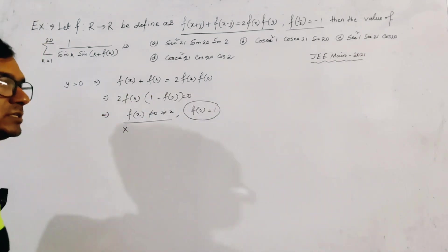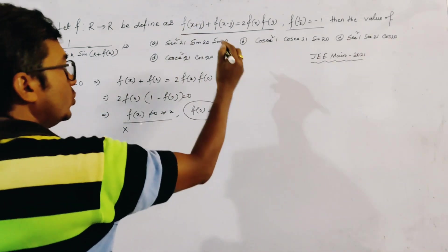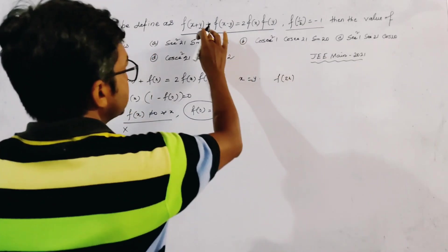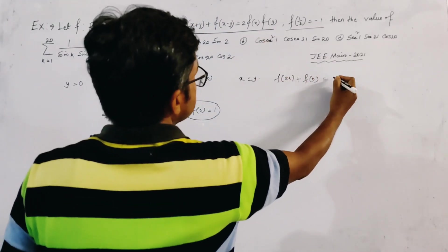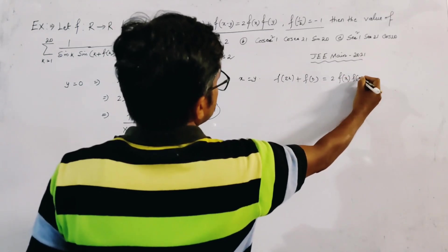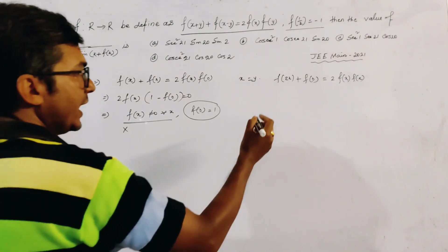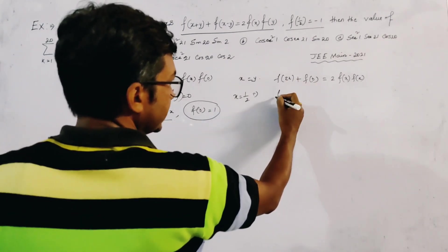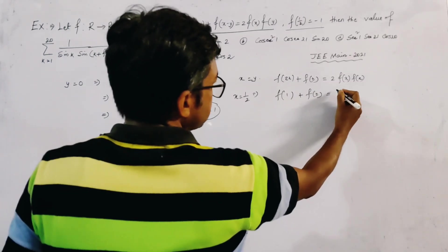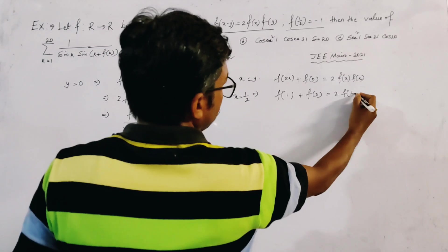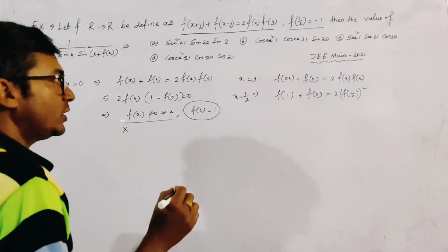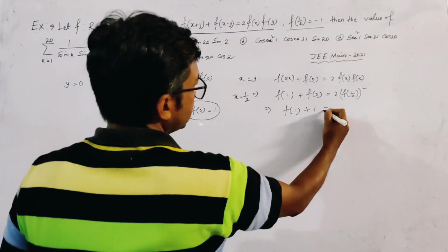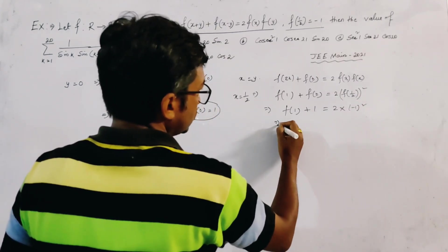Now we put x = y in the relation. We get f(2x) + f(0) = 2·f(x)² for all x. Now if we put x = 1/2, we get f(1) + f(0) = 2·f(1/2)². Substituting f(0) = 1 and f(1/2) = -1, we get f(1) + 1 = 2·(-1)² = 2, so f(1) = 1. This is a very important relation.